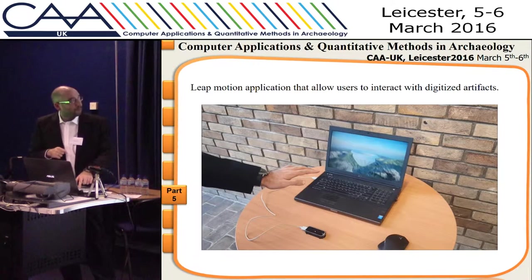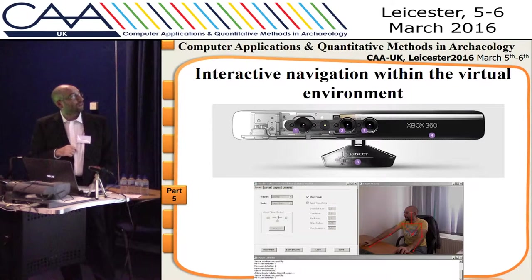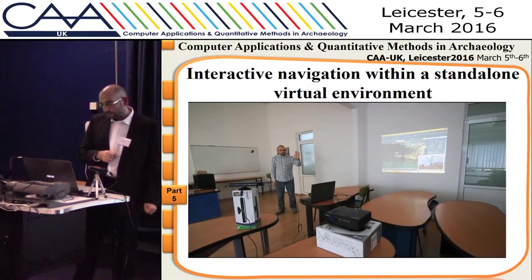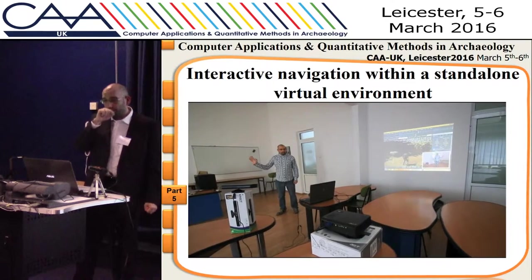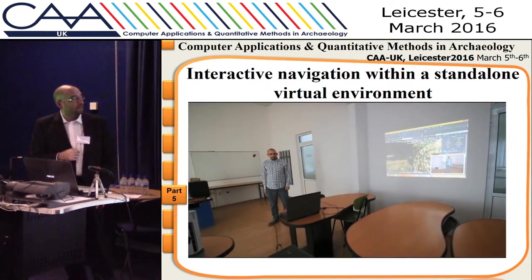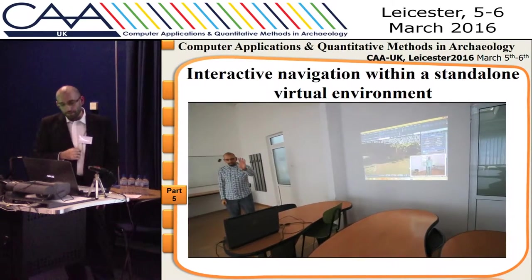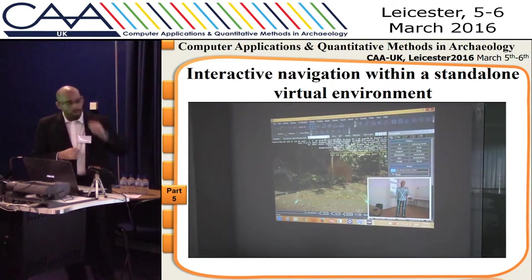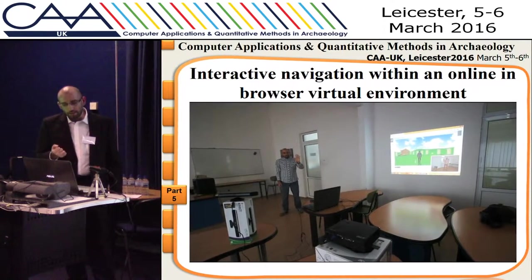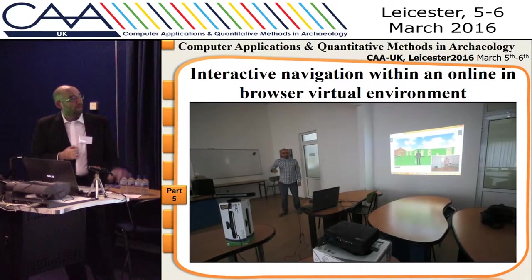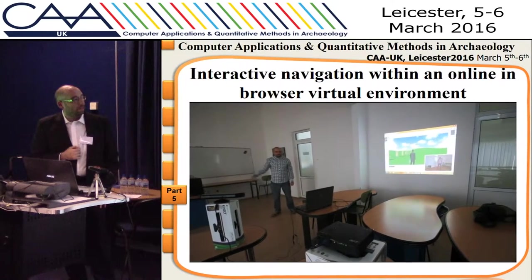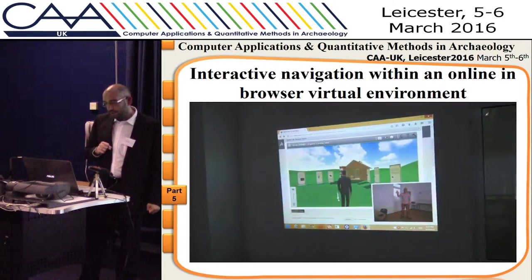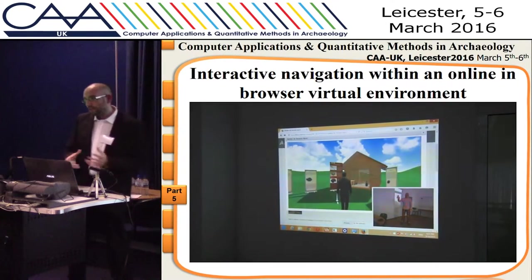The Leap Motion sensor is able to acquire the position of two hands — left and right — within a pretty large area. The second sensor we use is the Kinect — the first Kinect 360 — and we use this to create interaction inside a virtual environment. One application is created as a standalone virtual environment. The second version runs inside an online browser; the graphics aren't as good but it is much easier to disseminate to other potential viewers.